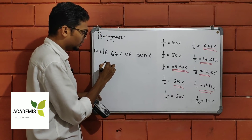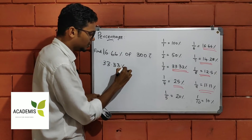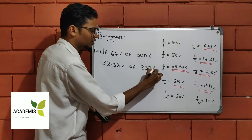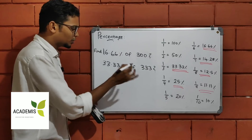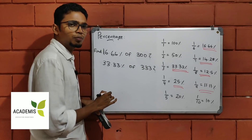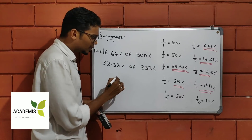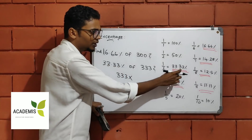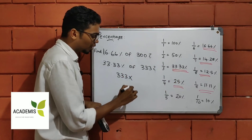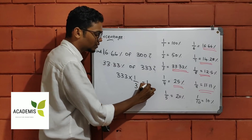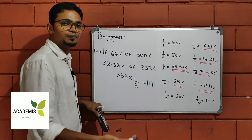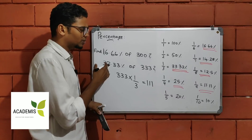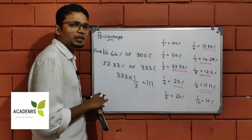Find 33.33% of 333. You can see 33.33 corresponds to 1 by 3. So we have to answer 333 divided by 3. The idea is clear — this is how we apply the fraction values directly.